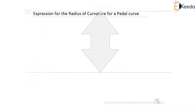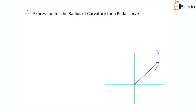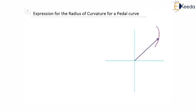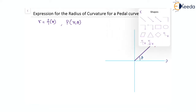In the polar coordinate system, we have the curve r equal to f of theta. Let there be any point P with r and theta as parameters. The angle of P with the initial axis will be given by theta, and let's draw a tangent to this curve at point P.